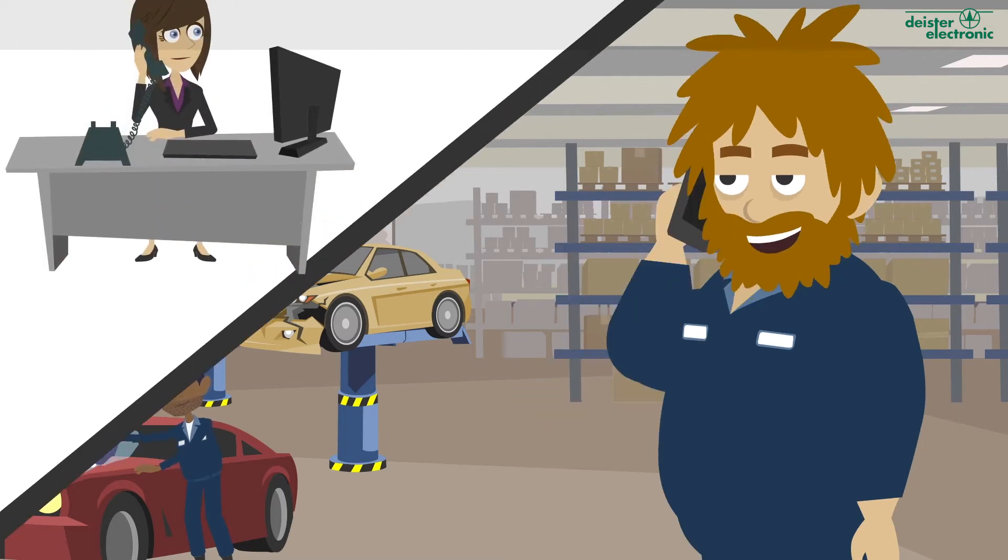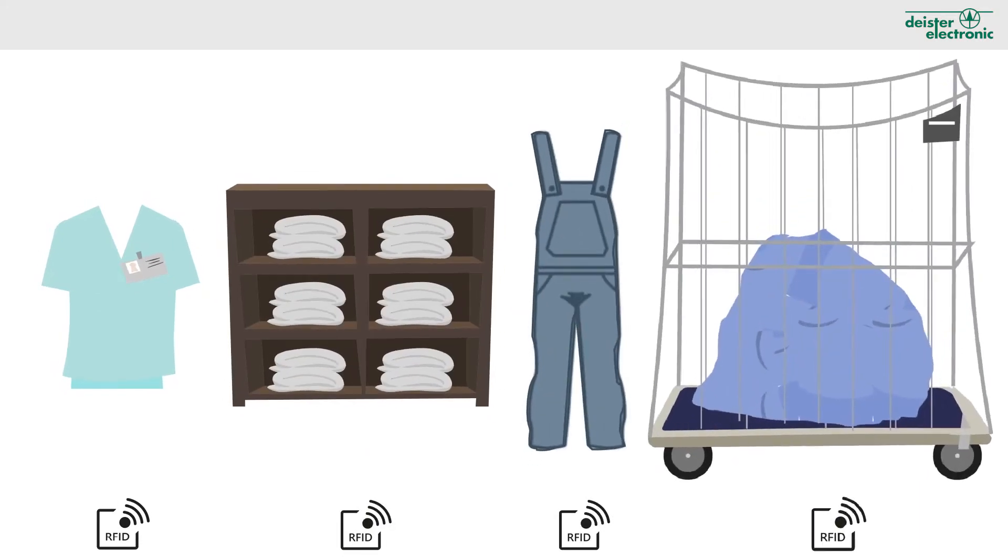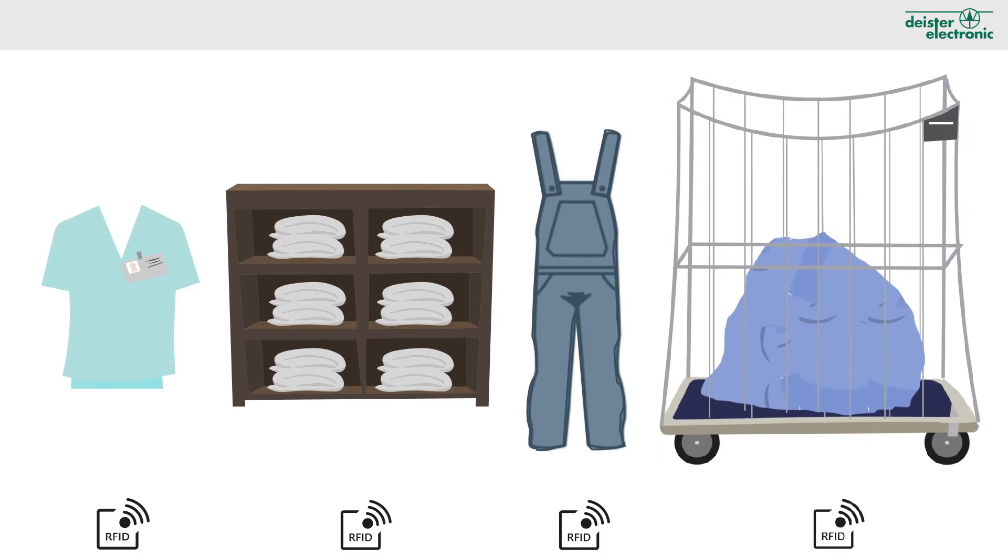When ordering your textile management solution from Dice to Electronic, all laundry items such as smock overalls, towels or work wear, as well as the laundry containers, are marked with RFID transponders.